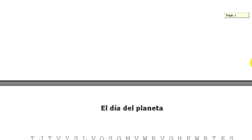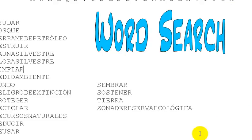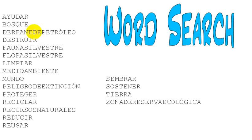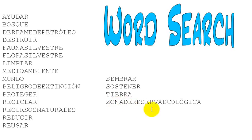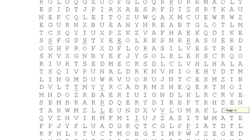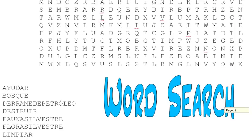The word search — I'll show it to you so you can see what it looks like. We have El Día del Planeta at the top, so all those words with the exception of El Día del Planeta are listed in here. The difference is that I removed all the articles — the El, La, Los, or Las. For example, Derrame de Petróleo is listed without El, and the ecological reserve, Zona de Reserva Ecológica, is written as one long word without the La. Anyway, the word search is linked in the description. I don't have the answers, so you'll find them on your own. That's it for this video — thanks for watching, and we'll see you next time!